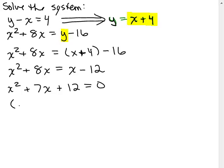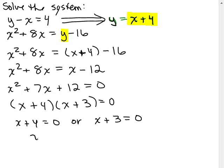And I think I'm going to be able to factor that without any trouble here, X plus 4, X plus 3 is 0. So I set each factor equal to 0. And I found 2 different solutions for X.